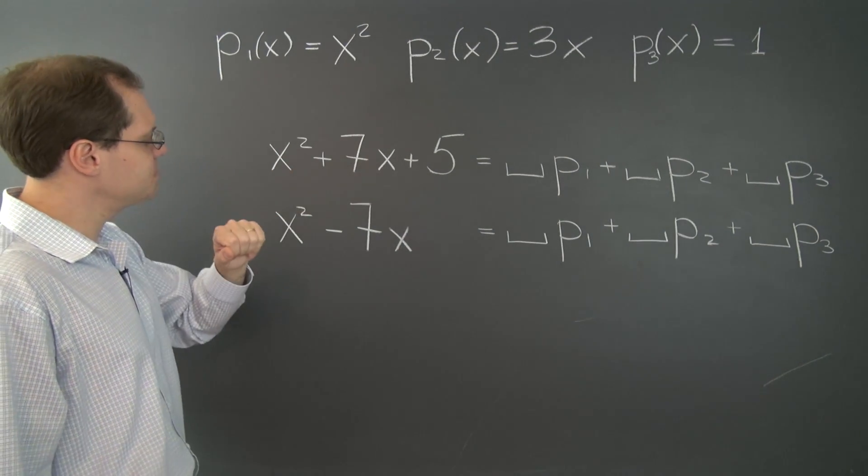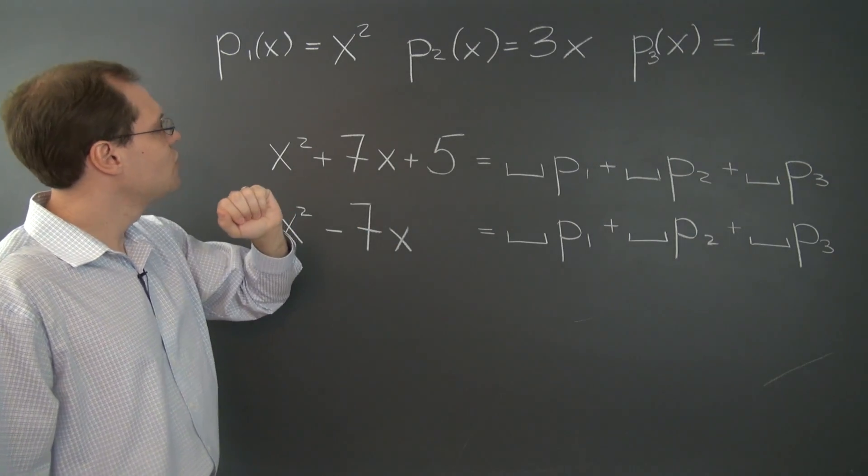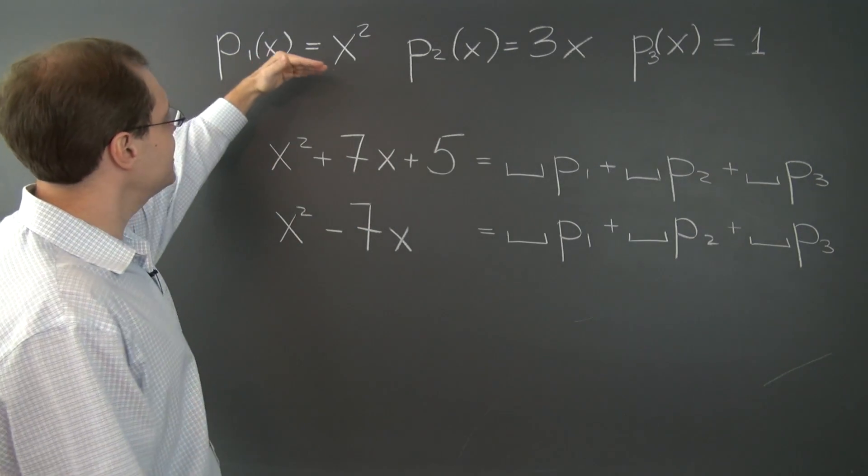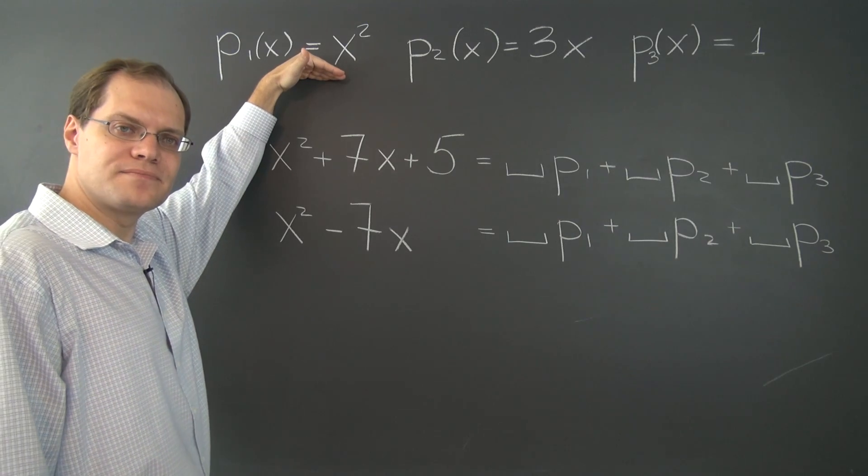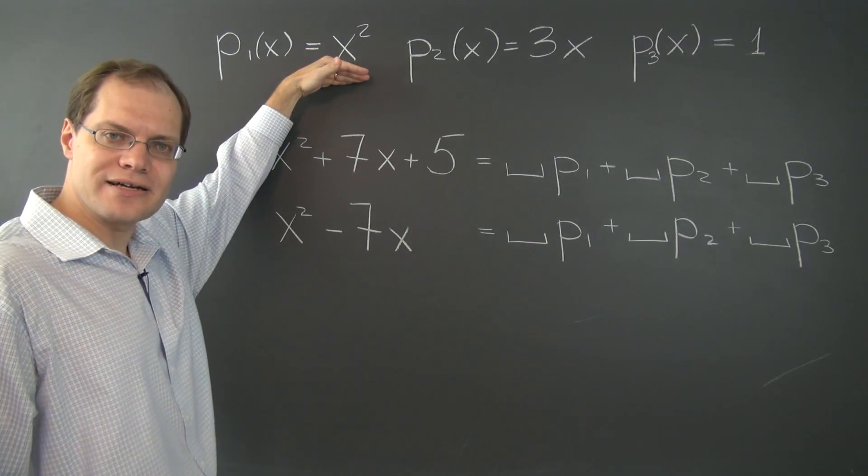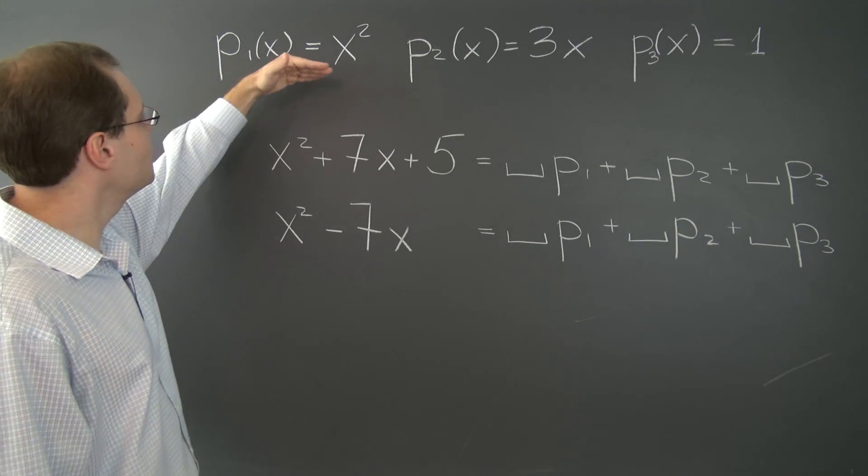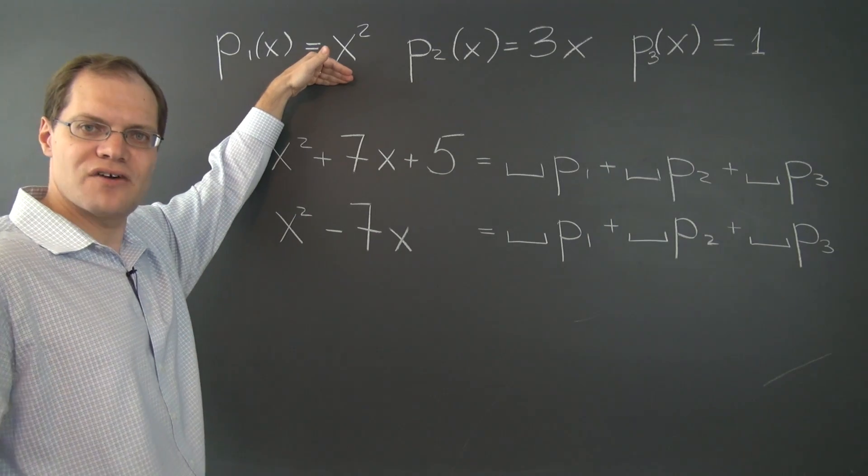To decompose this polynomial, x squared plus 7x plus 5, we clearly have to take 1 of p1 because that's the only place where x squared can come from. And to match this coefficient of 1, we need precisely 1 of p1.